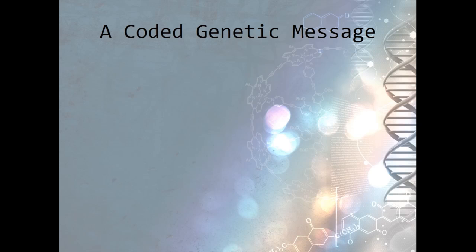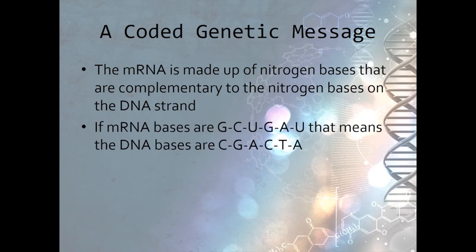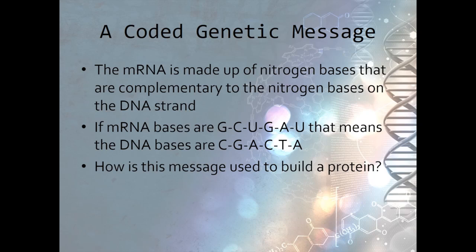The information carried by the mRNA is like a coded message. Since the mRNA strand is made up of the nitrogen bases that are complementary to the DNA strand, we know what the DNA bases are. For example, if the mRNA strand is GCUGAU, then the DNA bases are CGACTA. But how is this message used to build protein?